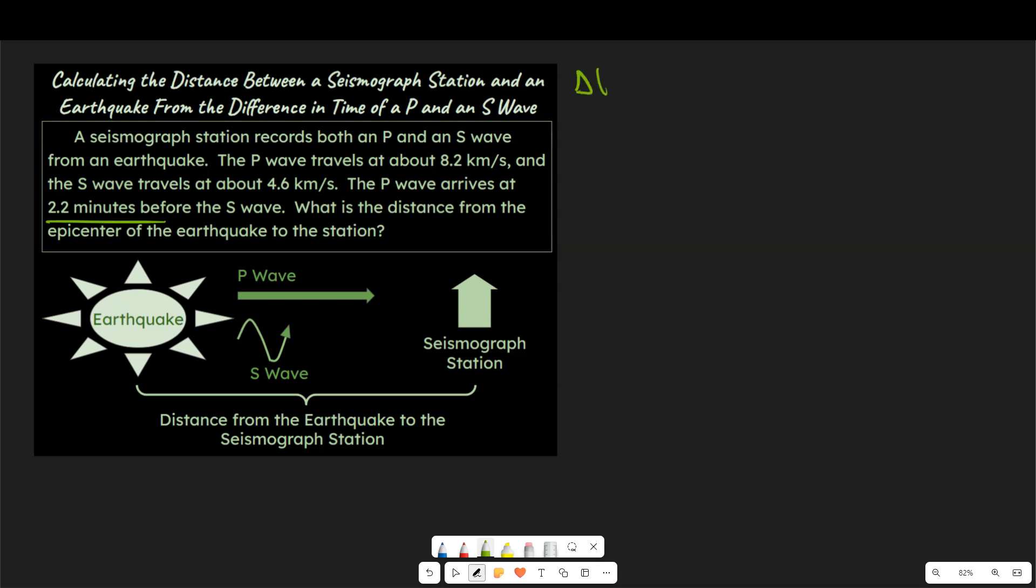So we're going to say difference in time between P and S equals 2.2 minutes, but actually more helpful than that since everything else is in kilometers per seconds, for instance, we can go ahead and convert that into seconds, and if we do the math here, it turns out that that is 132 seconds.